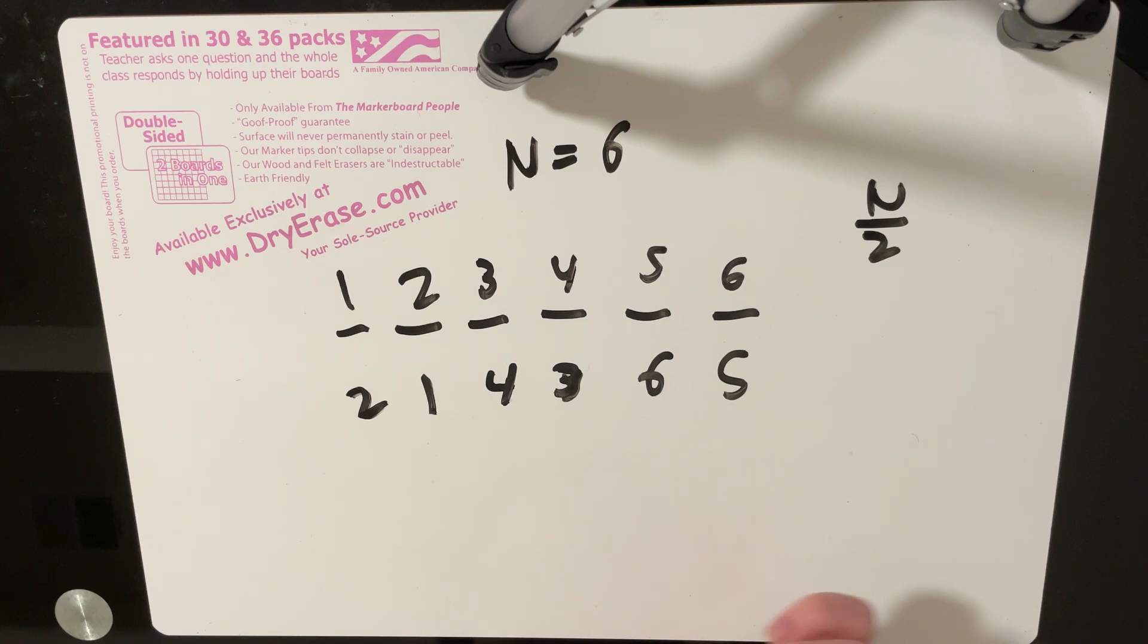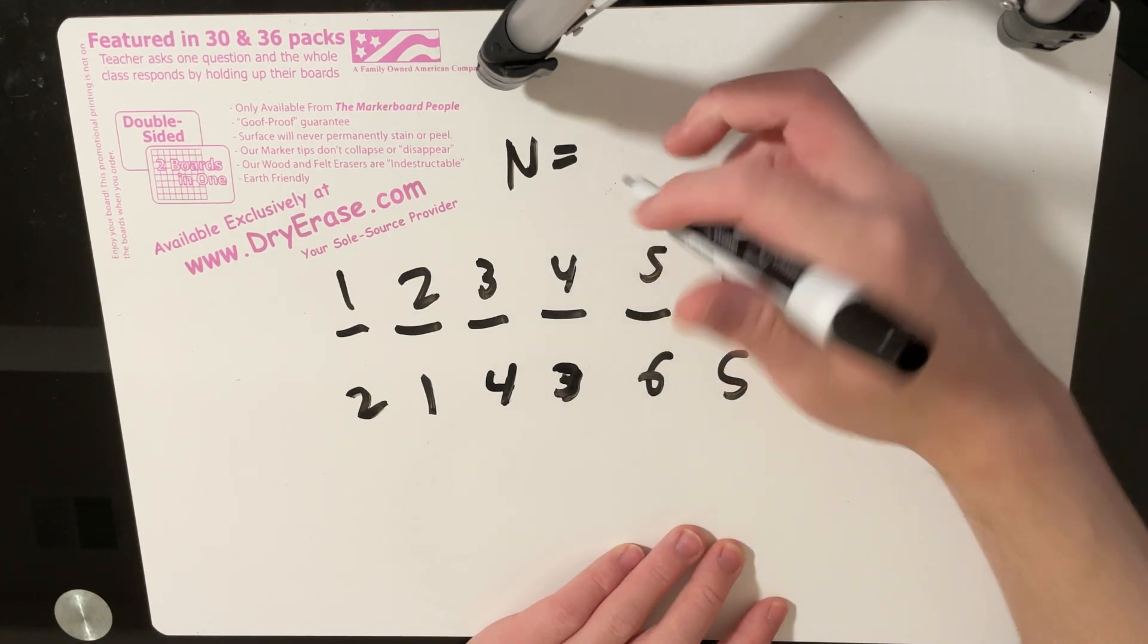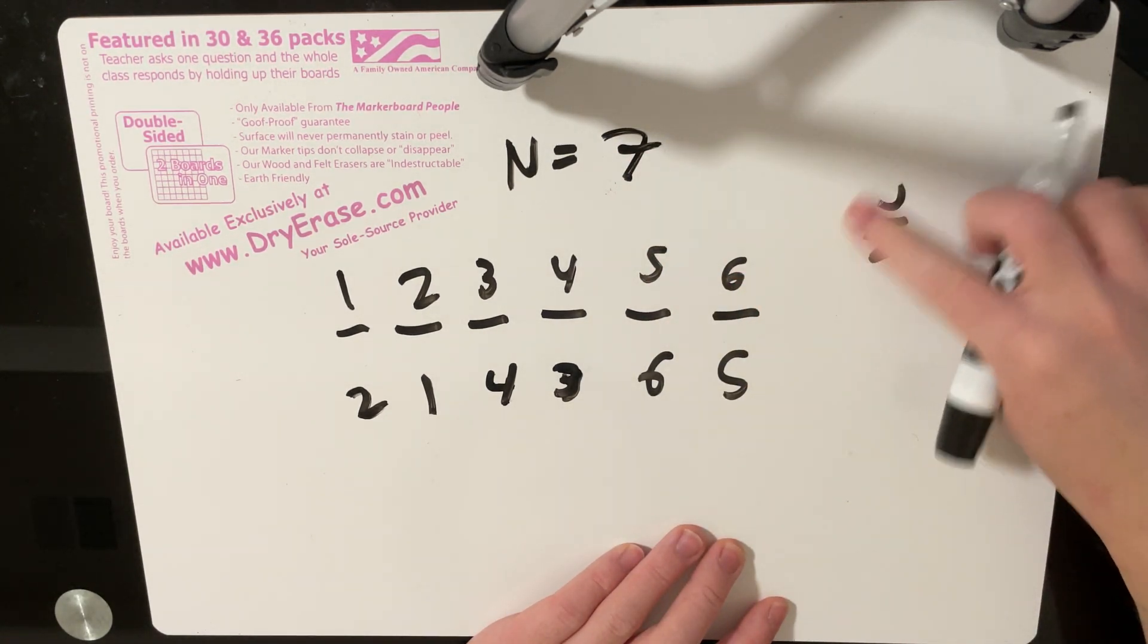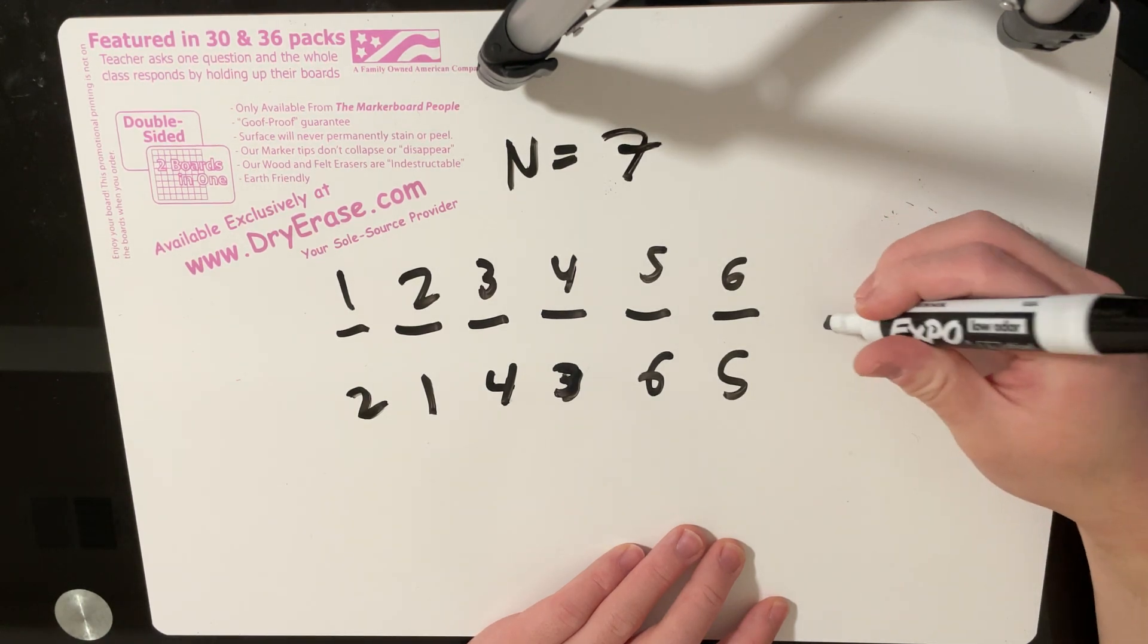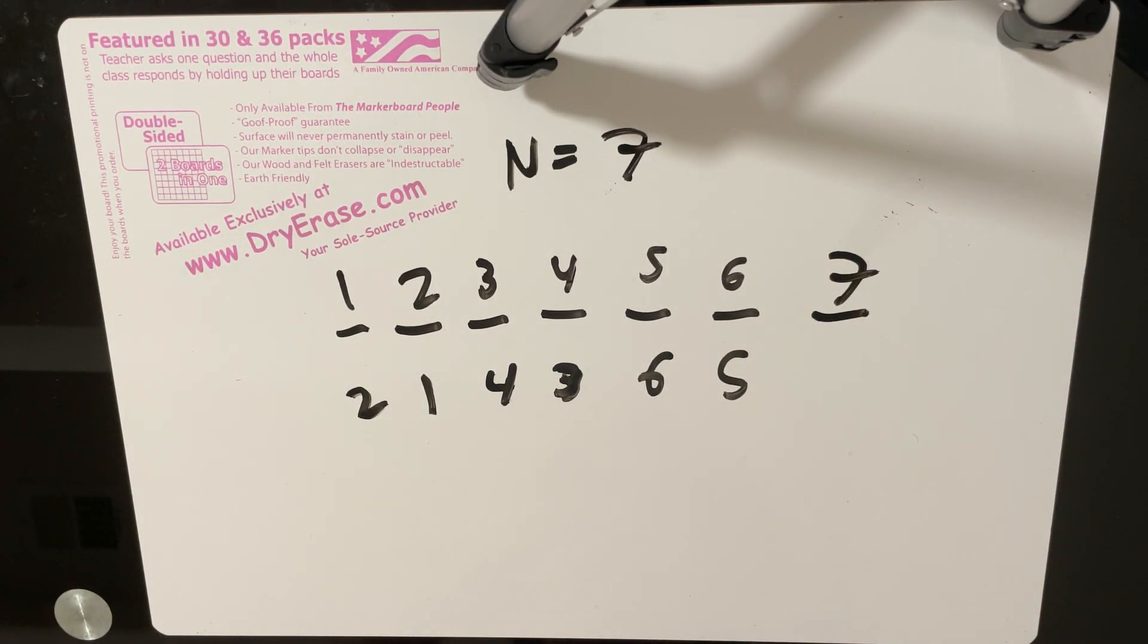Now, what if n was odd? So let's say, for example, n was equal to 7. And then we essentially had one extra number over here, 7. So what are we doing here?